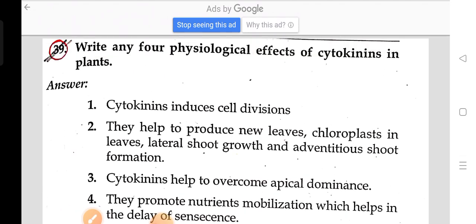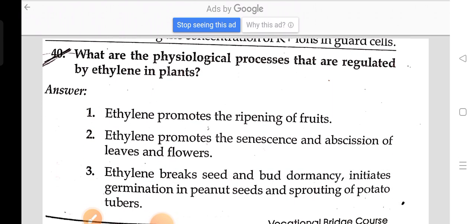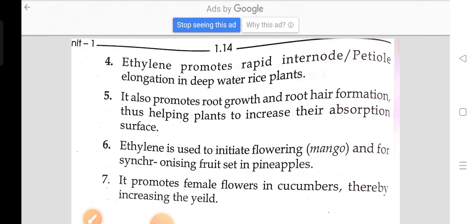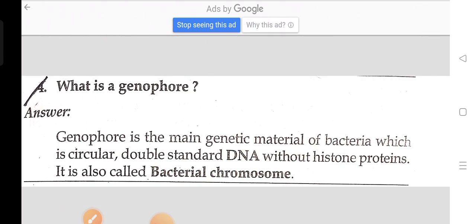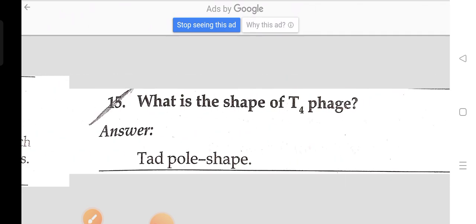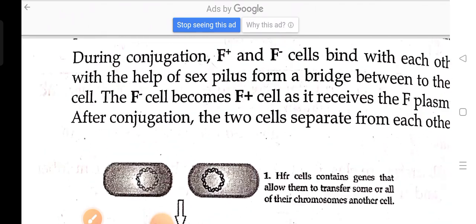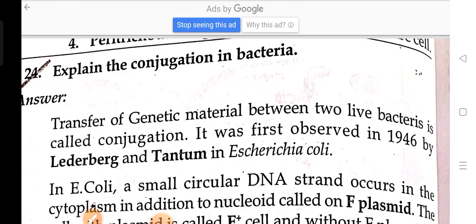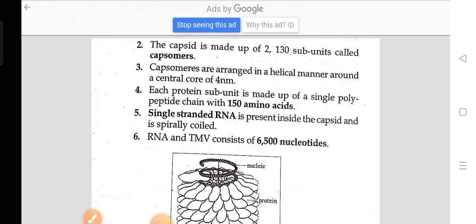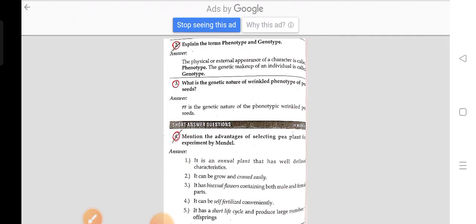Write any four physiological effects of cytokinins in plants. What are the processes that are regulated by ethylene in plants? What is genome? What is the shape of T4 phage? Explain the conjugation in bacteria. Explain the structure of TMV.